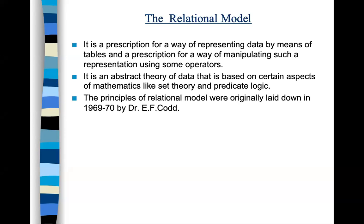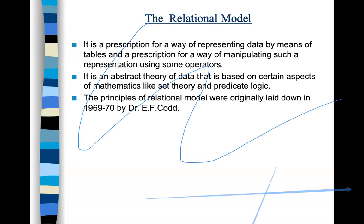For example, we will have three tables: a student table, a course table, and a teacher table. The student and course tables are related — showing which students are enrolled in which courses. The course and teacher tables are related — showing which teacher teaches which course. This conceptual design is called the relational model.